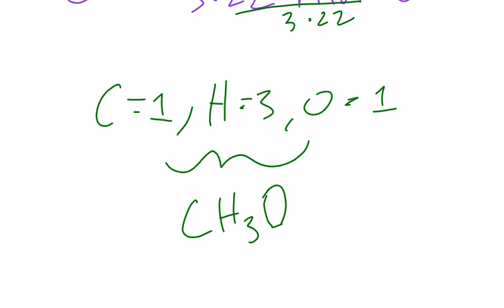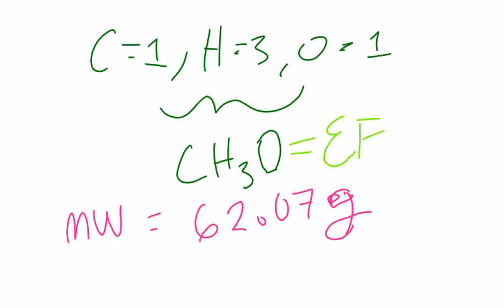Once divided, we get C as 1, H as 3, and O as 1 to get the formula CH3O. Now this is the empirical formula, but we want the molecular formula. So remembering the molecular weight as 62.07 grams, we will calculate the molecular weight of CH3O.